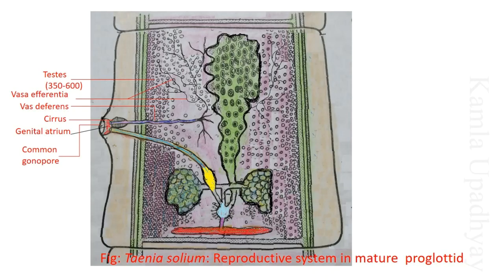With the picture of the male reproductive organ: it contains testes numbering 350 to 600, all connected via vasa efferentia, which meet at a common duct called vas deferens. The vas deferens leads to a muscular copulatory organ called the cirrus. The cirrus connects to the genital atrium, a cup-like structure, which opens outside through a common gonopore that also has a sphincter structure to help open and close it.